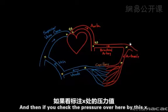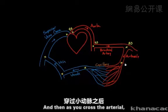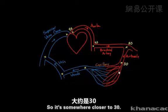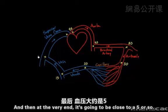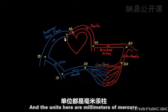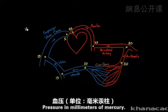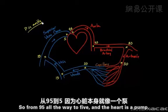Checking the pressure at the arteriole gives about 80. Then as you cross the arteriole, the pressure falls dramatically — down to around 30. At the beginning of the capillaries it's about 20, then 15, then about 10 at the venule, and at the very end it's close to 5. So the pressure falls from 95 all the way to 5 millimeters of mercury.